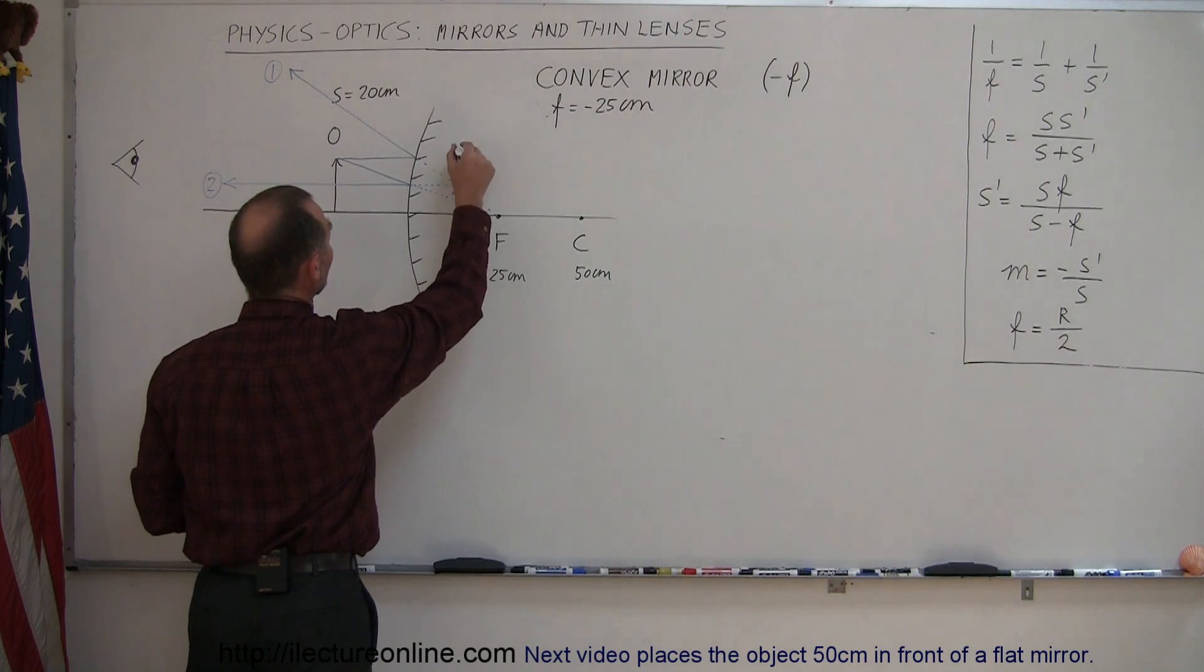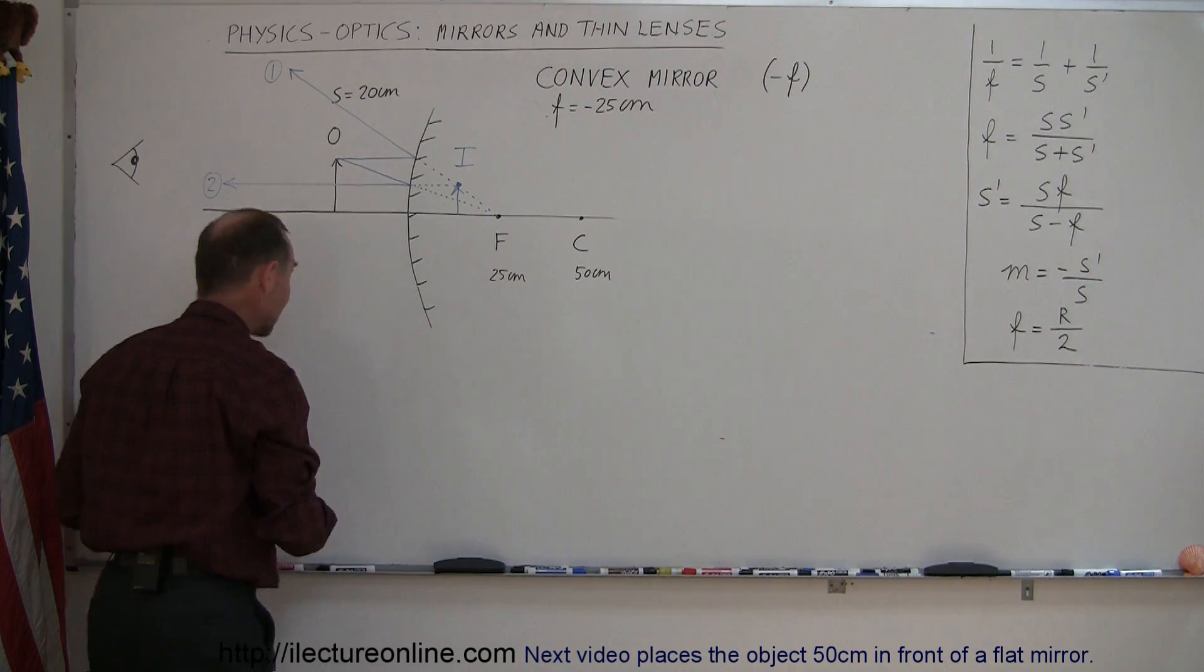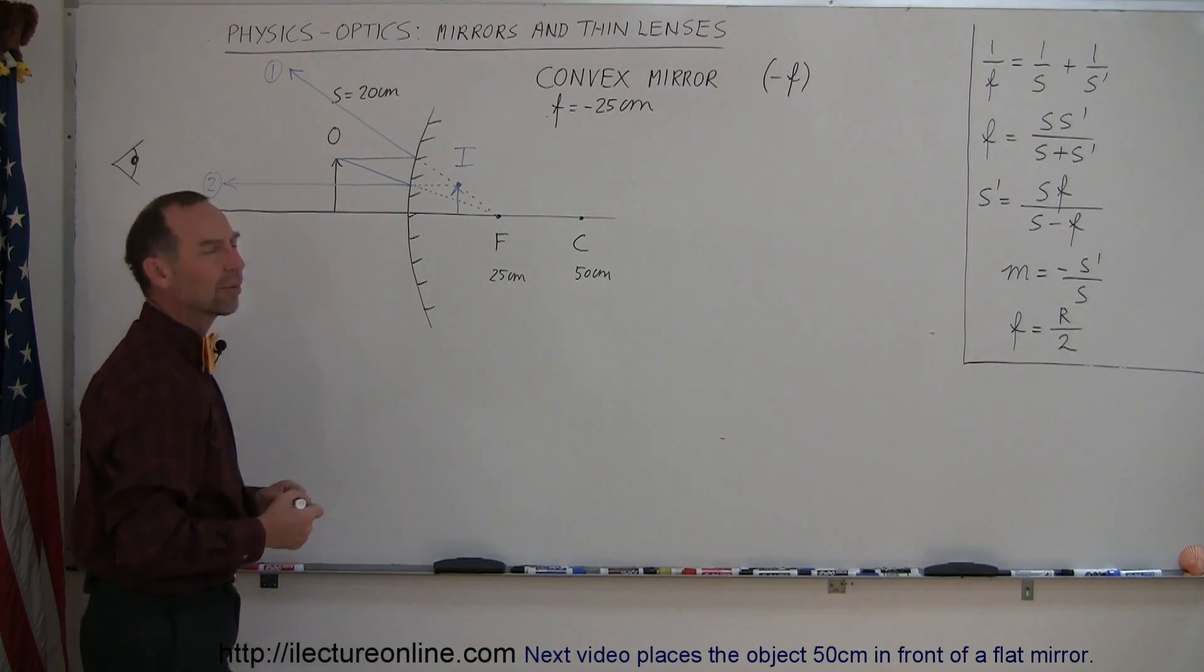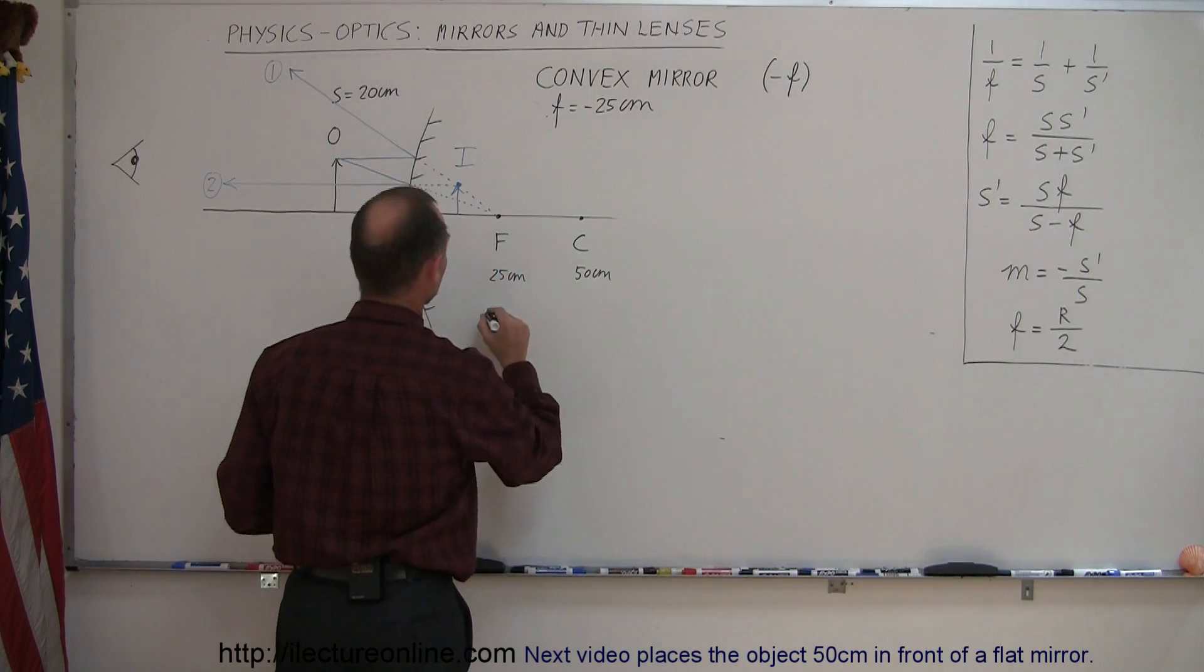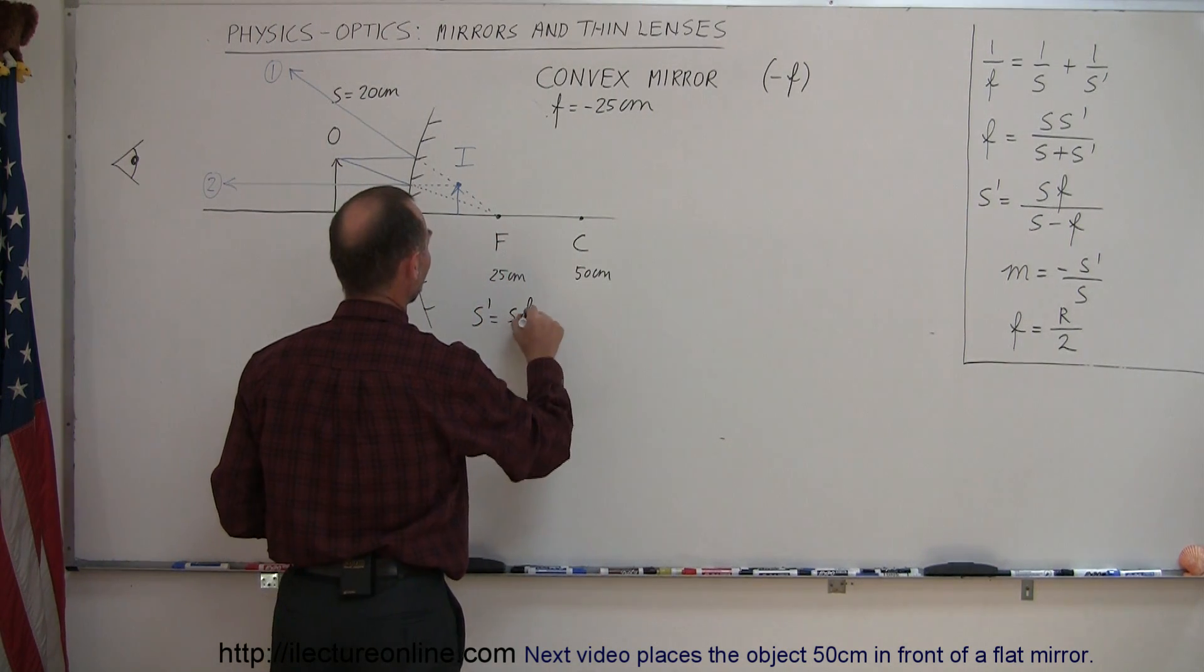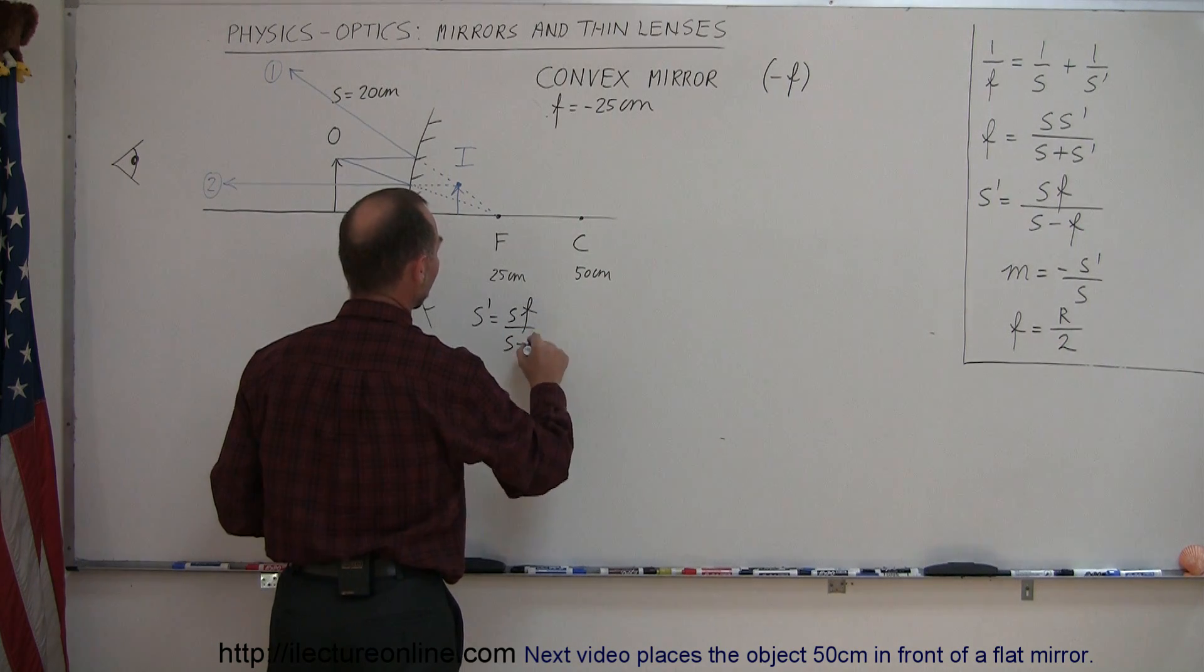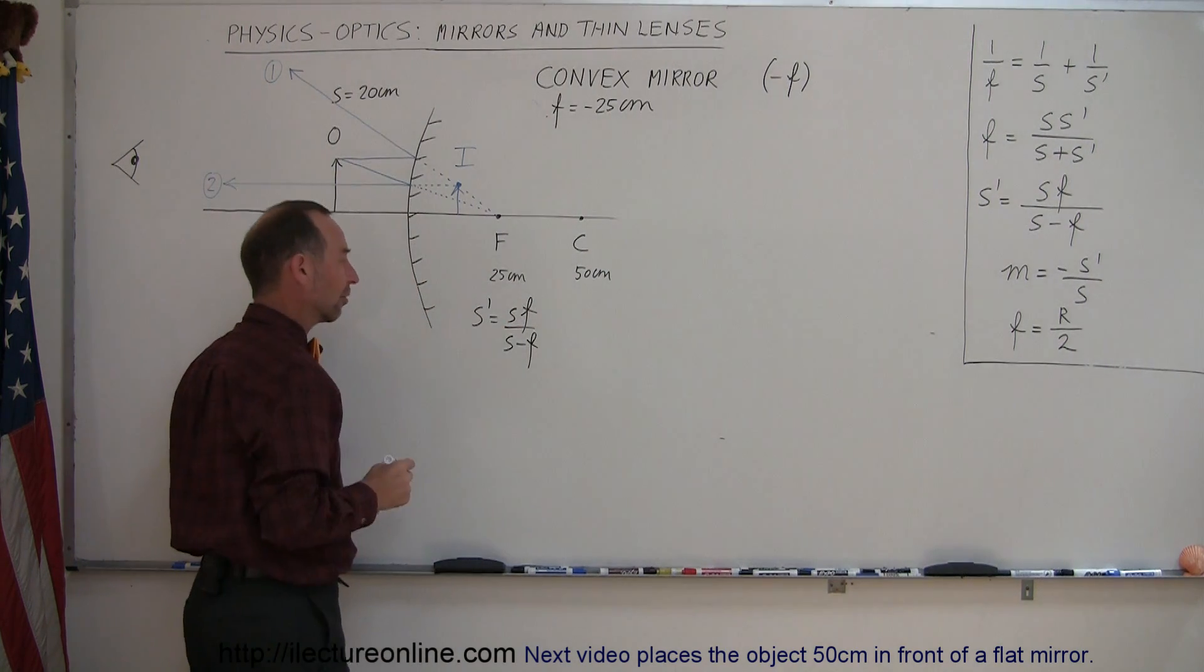That's where the image will appear, not that it's really there but it appears as if it's there. That's what the brain does for us. So there's the image and now we have to find the image distance, the size of the image and so forth. So right away we start with the equation S' is equal to SF over S minus F. Again, S is the object distance, F is the focal length.